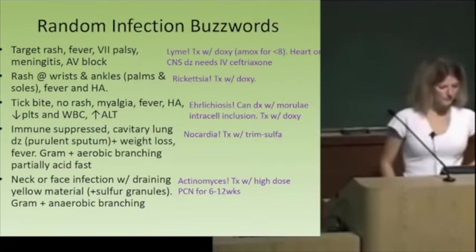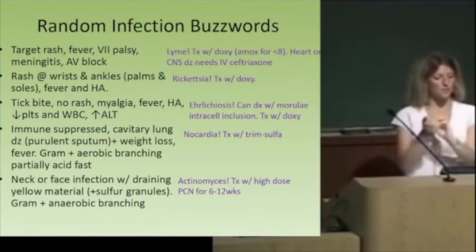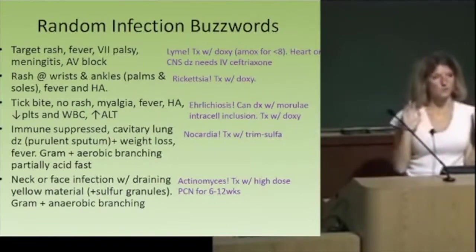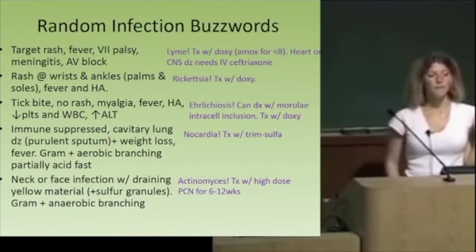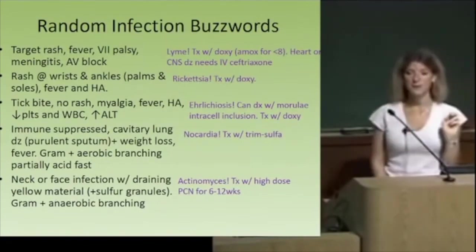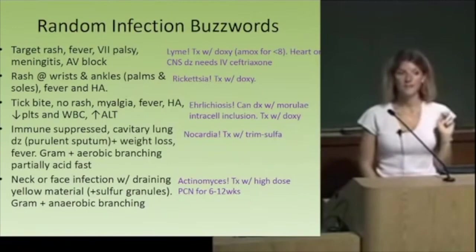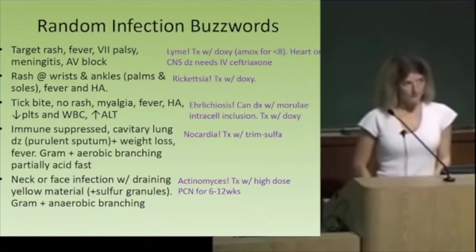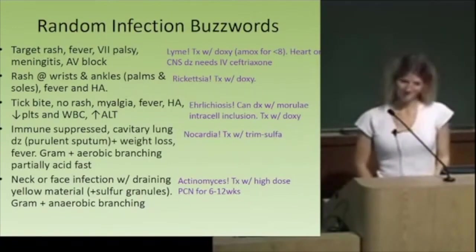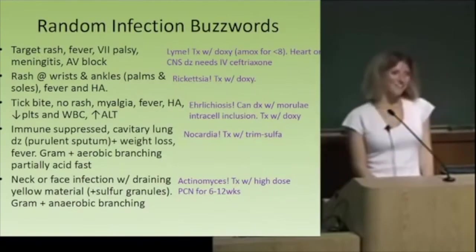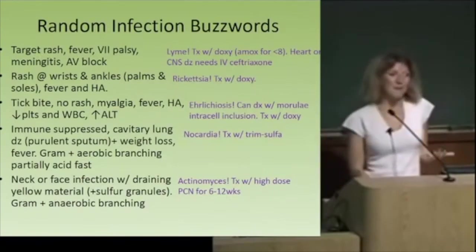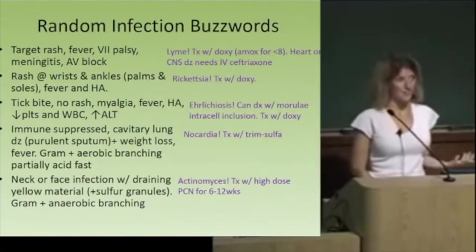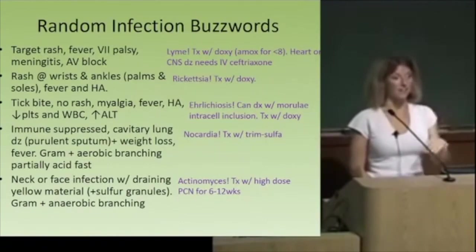A rash at wrists and ankles, palms and soles, with fever and headache — that's Rocky Mountain spotted fever. Treat with doxycycline. Even if the kid is under age eight, everybody gets doxy for Rocky Mountain spotted fever — amoxicillin doesn't work here.